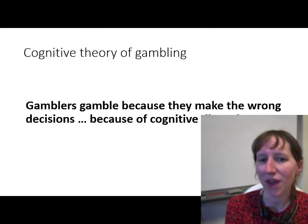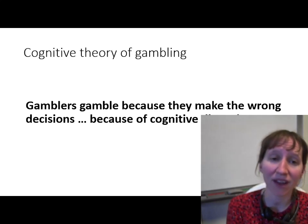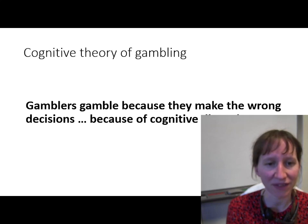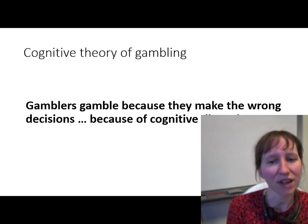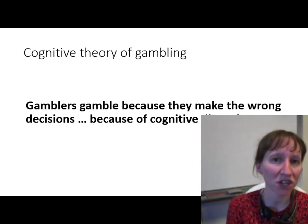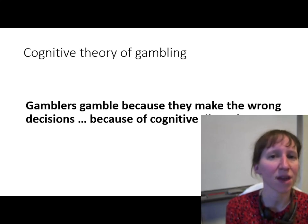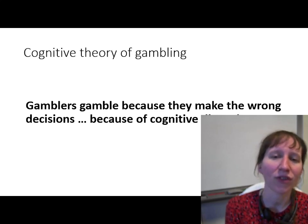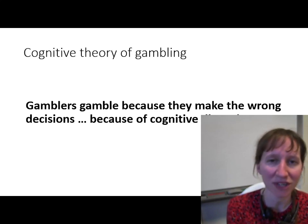The Cognitive Approach of Gambling looks at how our thought processes affect our addiction. In the case of gambling, the idea is that gamblers get addicted because of cognitive distortions — faulty thought processes they possess about gambling, about probability, and about the way that gambling works — and so they end up addicted.